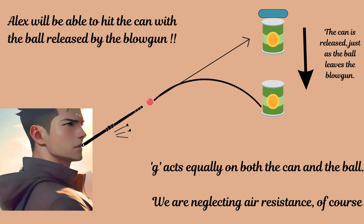With the effect of downward acceleration being the same on both, the ball will cover the same distance downwards as the can. If Alex was initially aimed exactly at the can, the ball will hit it — given that the can is released at the very moment the ball starts its parabolic trajectory.